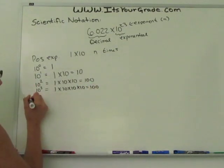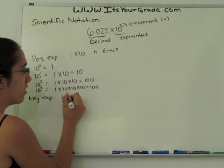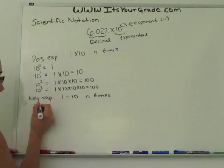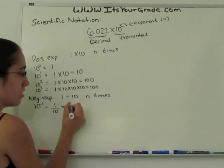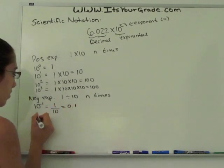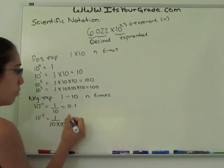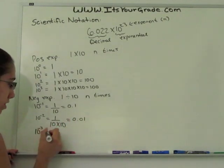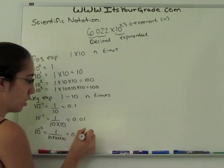On the other hand, if you have a negative exponent, this is the same as 1 divided by 10 n number of times. So if you have 10 to the negative 1, this is the same as 1 divided by 10, which is 0.1. If you have 10 to the negative 2nd, this is 1 divided by 10 times 10, which is 0.01. If you have 10 to the negative 3rd, this is the same as 1 divided by 10 times 10 times 10, which is 0.001.